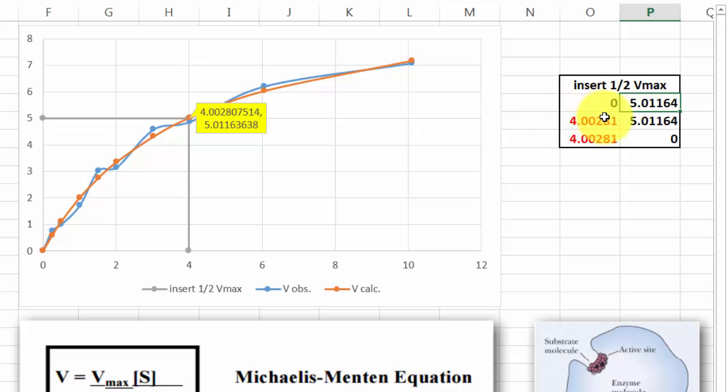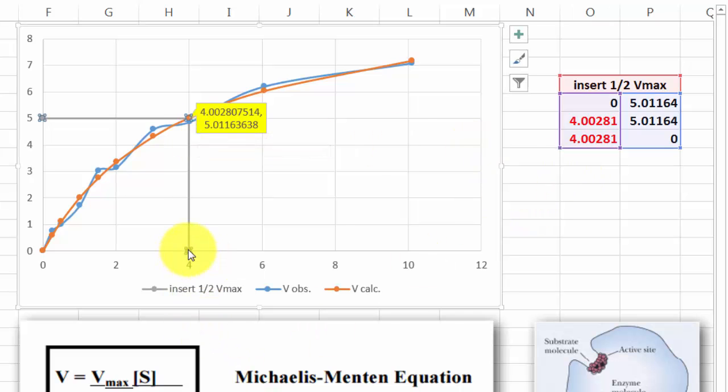Then that point, the second point, is another set of coordinates. That is on the x-axis, the Km value. And on the y-axis, half the Vmax. And finally the last one is a 0 on the y-axis. And the Km, the Michaelis constant, on the vertical one.